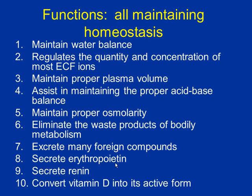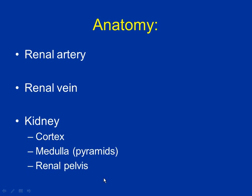Renin helps regulate blood volume and blood pressure. Number ten: convert vitamin D into its active form. Vitamin D is made in the skin, activated first in the liver, and then finally it goes to the kidney for the final activation.